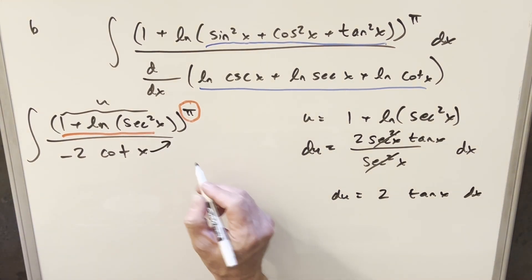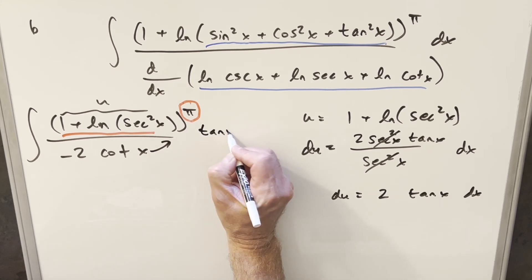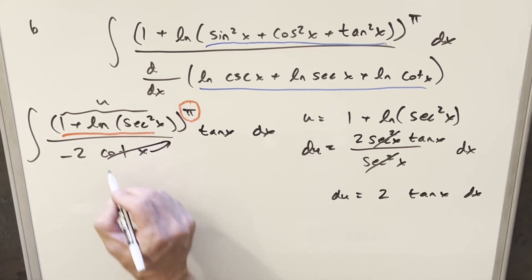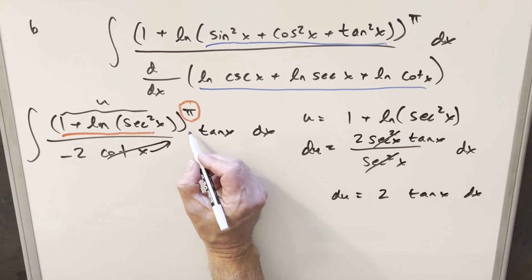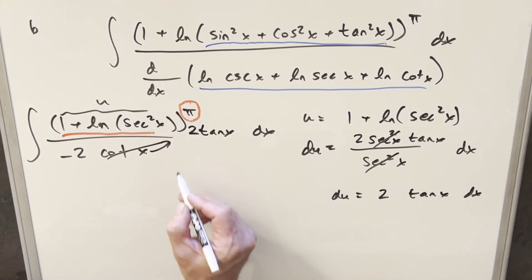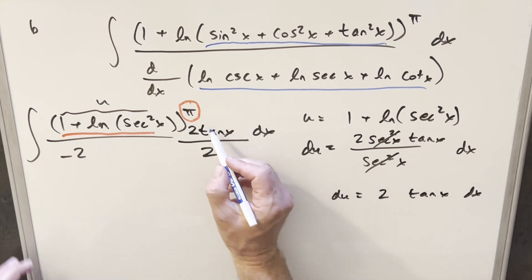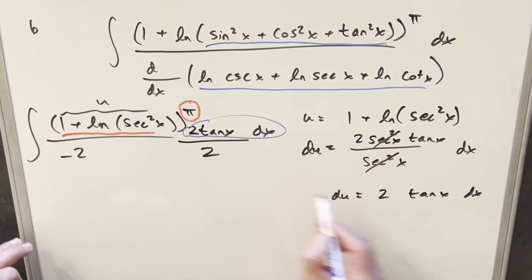And if I take this into the numerator, I can write this as tan x dx. But then let's just create this 2 as well. So I'll multiply in a 2. I don't want to change it, so I'll divide by 2. And so what we've done is we've just created our du right here.